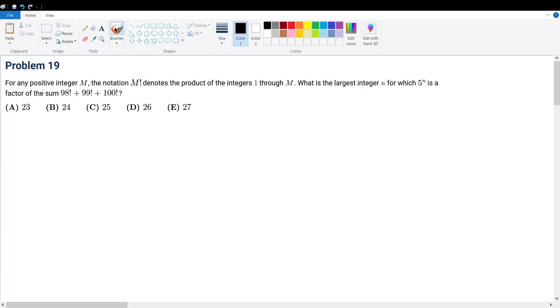Problem 19. For any positive integer m, the notation m factorial denotes the product of the integers from 1 through m, obviously because that's a factorial. What is the largest integer n for which 5 to the n is a factor of the sum of 98 factorial plus 99 factorial plus 100 factorial?